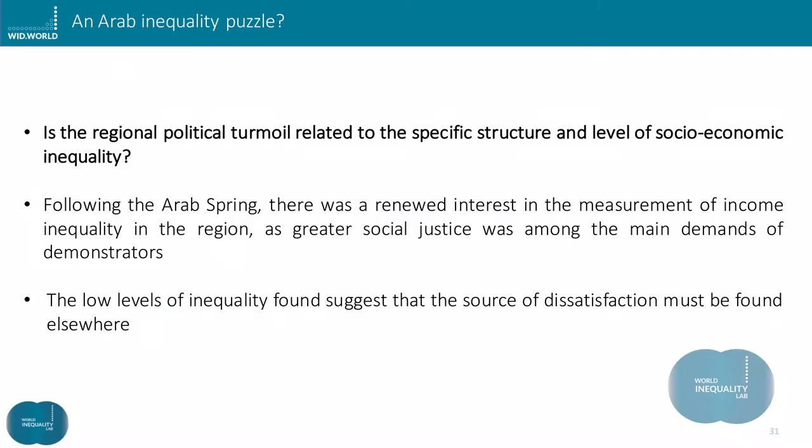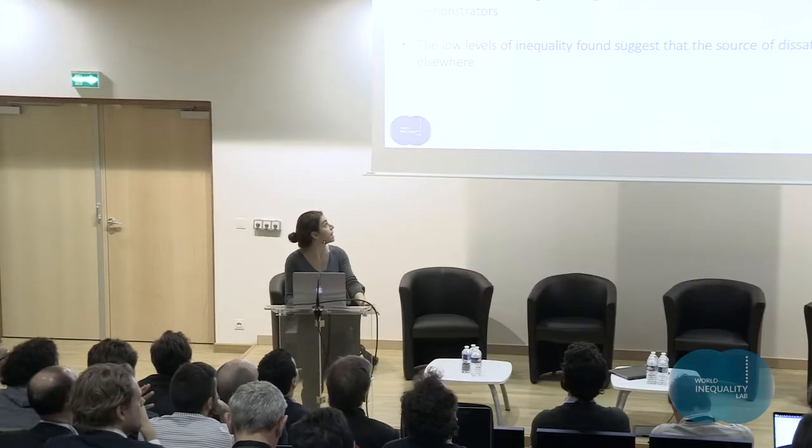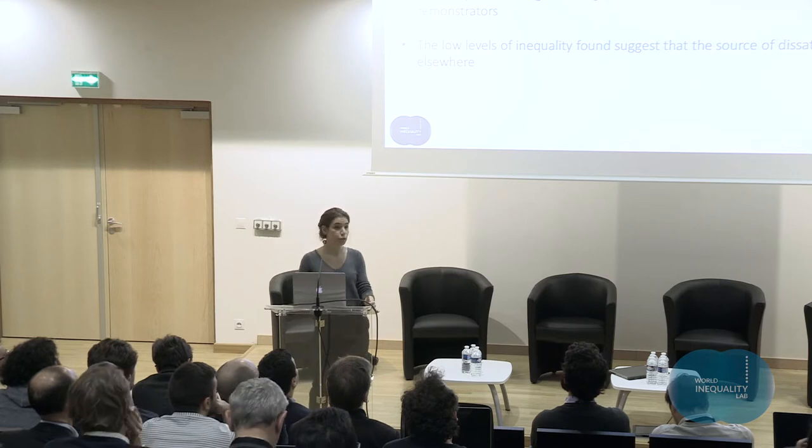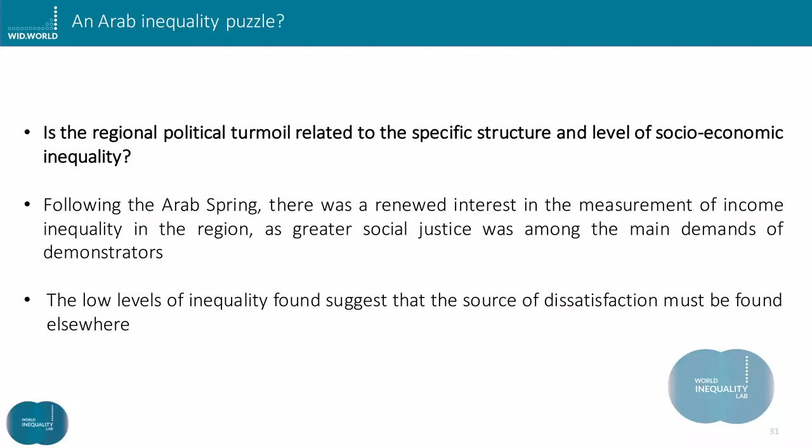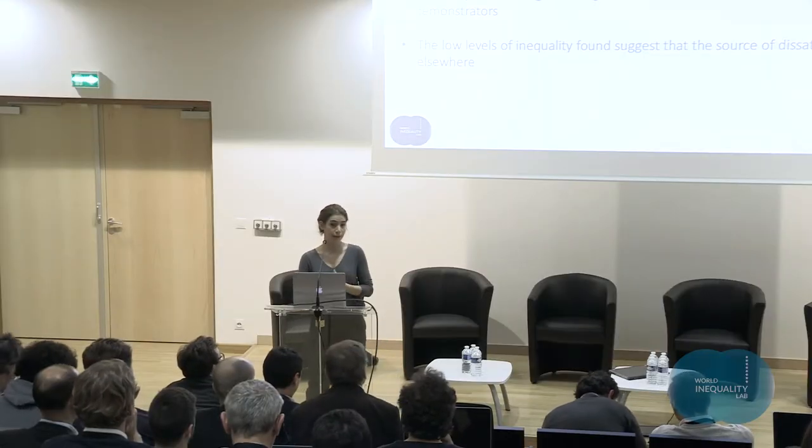So what was this dominant narrative? Given the great political instability in the region that has existed for several decades, it is natural to ask whether the political turmoil is related to the specific level and structure of socio-economic inequality. Indeed, following the Arab Spring, there has been a renewed interest in the measurement of inequality in the region, given that social justice was among the main demands of demonstrators. And all studies find low or even very low levels of inequality, suggesting that the source of dissatisfaction must be found elsewhere. This surprising fact — that measured inequality is very low, but that inequality was a major source leading to such a big upheaval — was coined the Arab inequality puzzle.